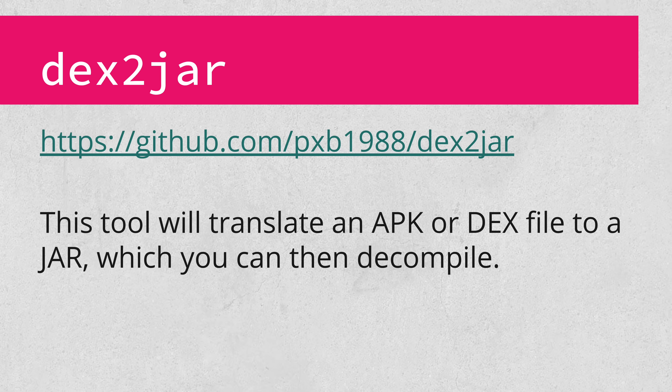Next up is DEX to JAR. This is a pretty simple tool, allowing conversion of APK or DEX files to standard Java JAR files. Given that the reverse of this — JAR to DEX — is how Android apps are typically compiled, this works quite well. It's not perfect, but I've found it to be very successful for my Android app hacking. If you're interested in compilers, spend some time thinking about how this must work, given that Dalvik bytecode is register-based and Java bytecode is stack-based. There are some really interesting challenges, and DEX to JAR handles them well.